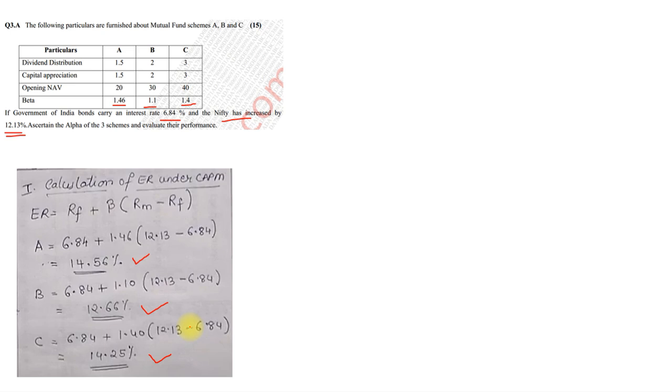Now, second thing that you need to find is the total return, because it's not given in the question, the returns are not given. So, total return ka formula is dividend plus the capital appreciation. So, dividend was 1.5, appreciation is also 1.5, so it came to 3. Second ke, it was 2 and 2, so it became 4 and 3 plus 3 became 6.